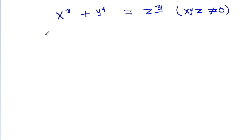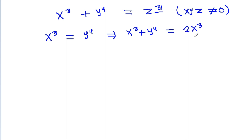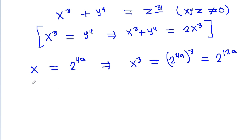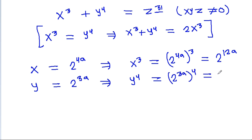For simplicity, suppose we set x³ = y⁴, so that x³ + y⁴ = 2x³. If x is a power of 2, say x = 2^(4a), then x³ = 2^(12a). And if y = 2^(3a), then y⁴ = 2^(12a). So both terms are equal.